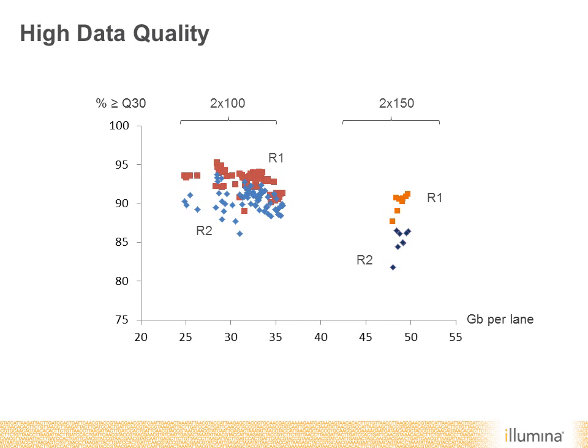This shows the high data quality achieved in runs on our instruments. The x-axis shows gigabases per lane of an individual HiSeq 2500 flow cell, and the y-axis shows the percentage of bases greater than Q30. With paired 100 base reads in both read 1 and read 2, we're achieving a very high level of data quality and very consistent output per lane. We also see something similar when going to paired 150 bases, though we've done fewer runs in that case.